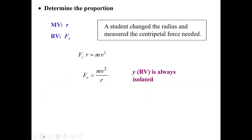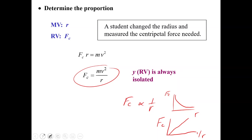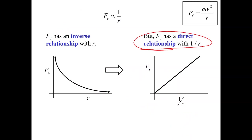FC has an inverse relationship with radius, which gives a decreasing curved graph. We don't want that — we want the direct relationship. So I can graph 1 divided by R, and that will give me a perfectly straight line. Graph the relationship — graph the proportionality — that's the key.